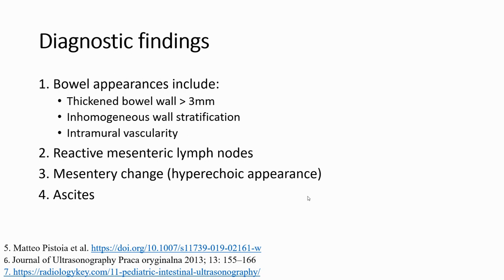After that, we have to look for secondary signs such as reactive mesenteric lymph nodes adjacent to the diseased portion of the intestine, and we should also assess adjacent mesenteric fat changes or ascites to be more confident about the confirmation of enteropathy.